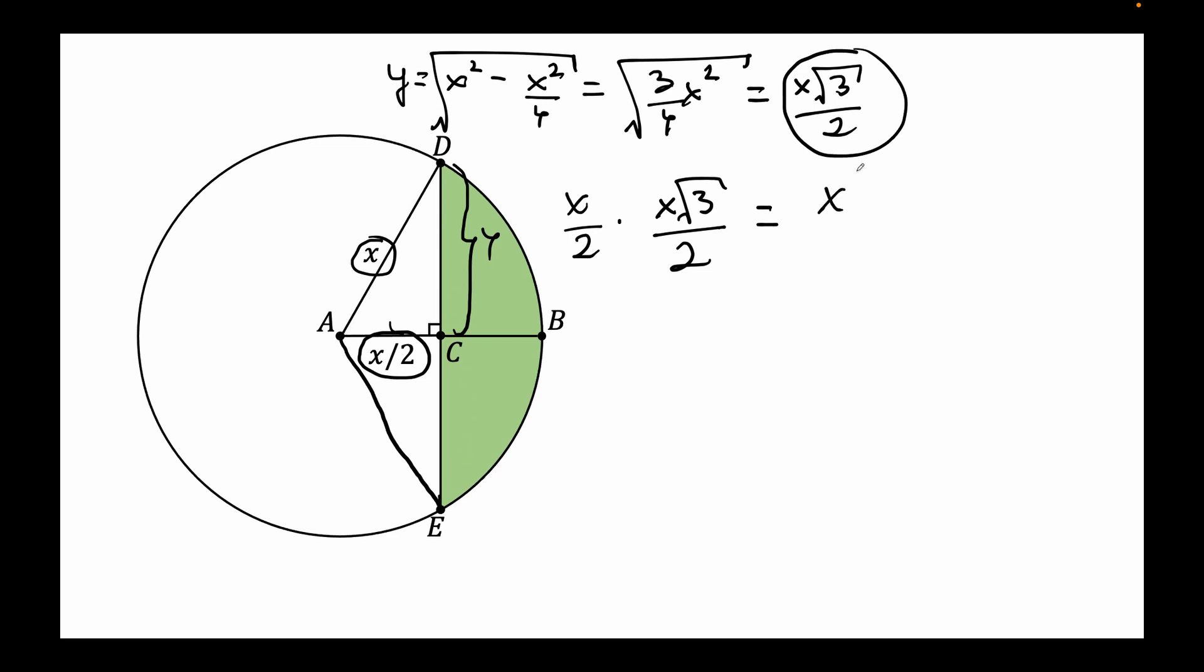So this expression will be the area of the triangle ADE, which is X squared, the root of 3 divided by 4. So this is the area of the triangle ADE. We are halfway there.